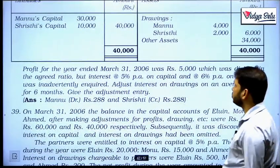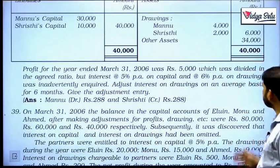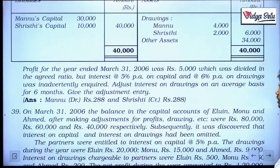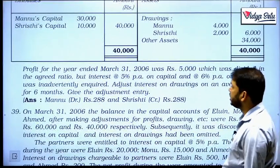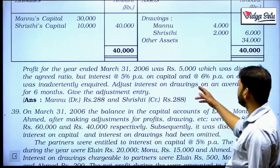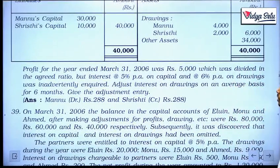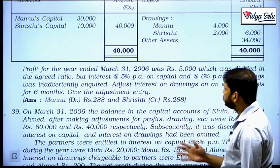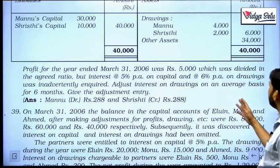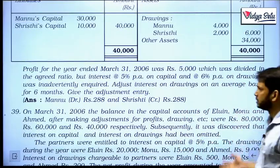Profit for the year ended March 31, 2006 was 5,000 which was divided in the agreed ratio, but interest at 5% per annum on capital and 6% per annum on drawings was inadvertently omitted.